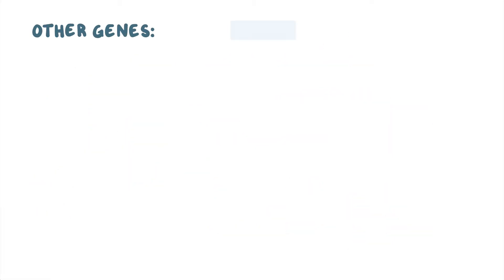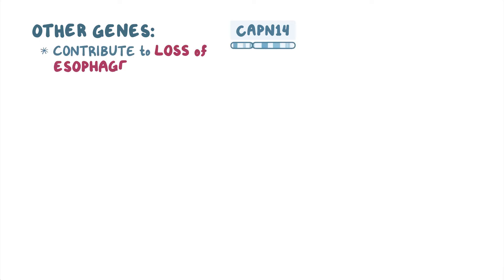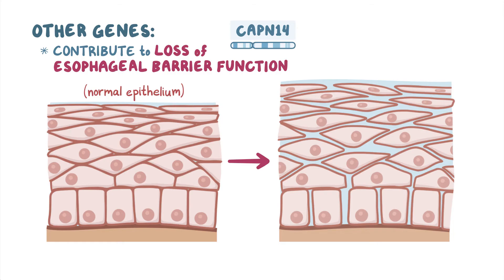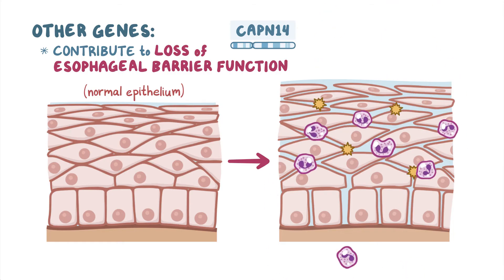Some other genes that are associated with EOE, such as CAPN14, contribute to the loss of esophageal barrier function, allowing increased ability for allergens and inflammatory cells, like eosinophils, to enter the esophagus, leading to the development of eosinophilic esophagitis.